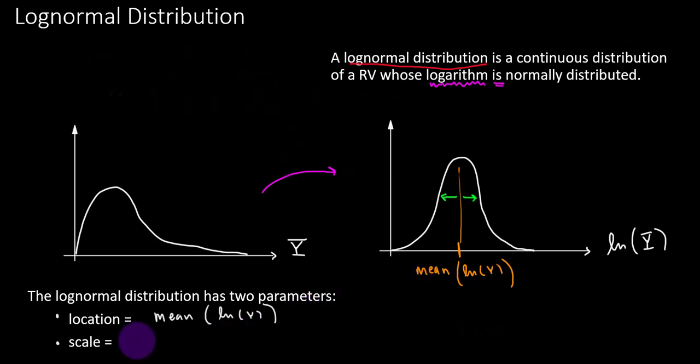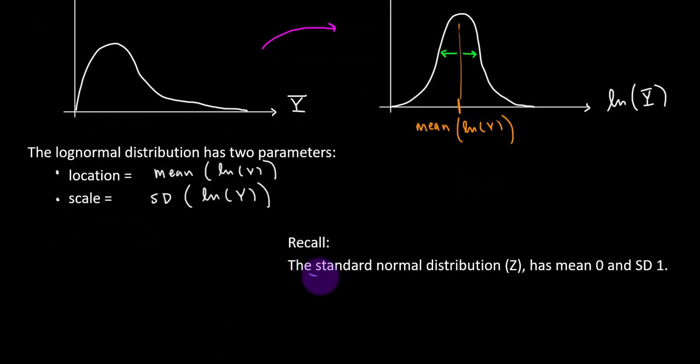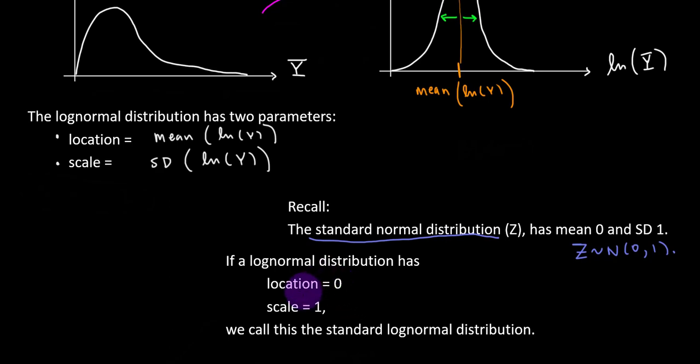The scale then is the standard deviation of the log of the variable. It's the same ideas that we are already familiar with. A little throwback here. Recall the standard normal distribution Z has mean 0 and standard deviation 1.